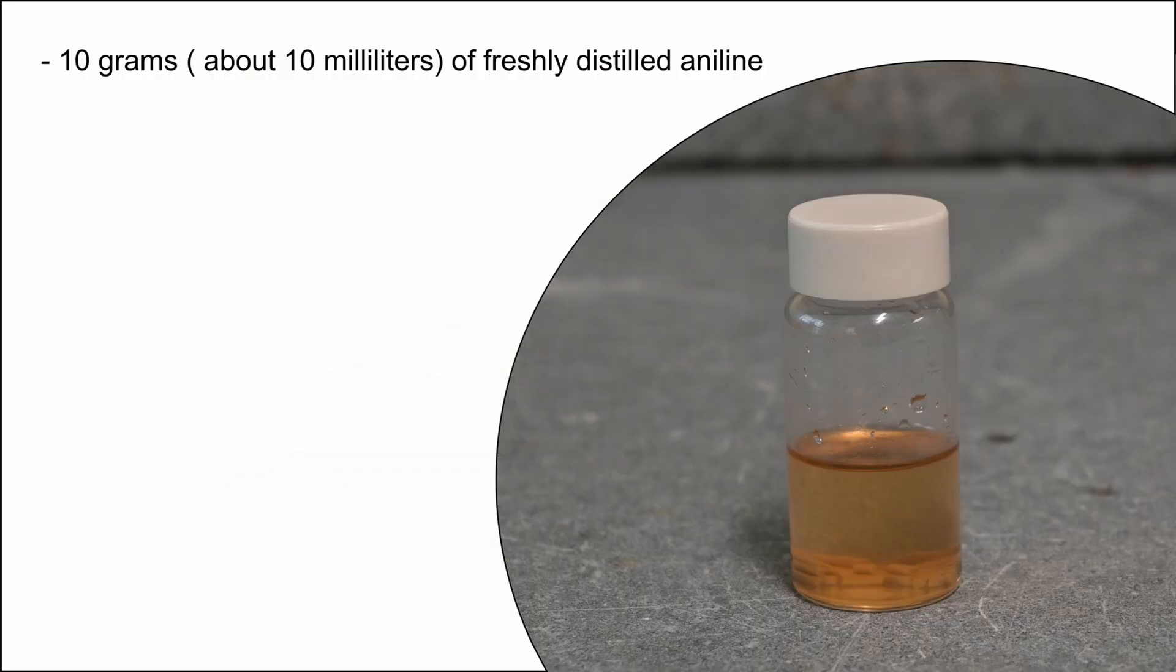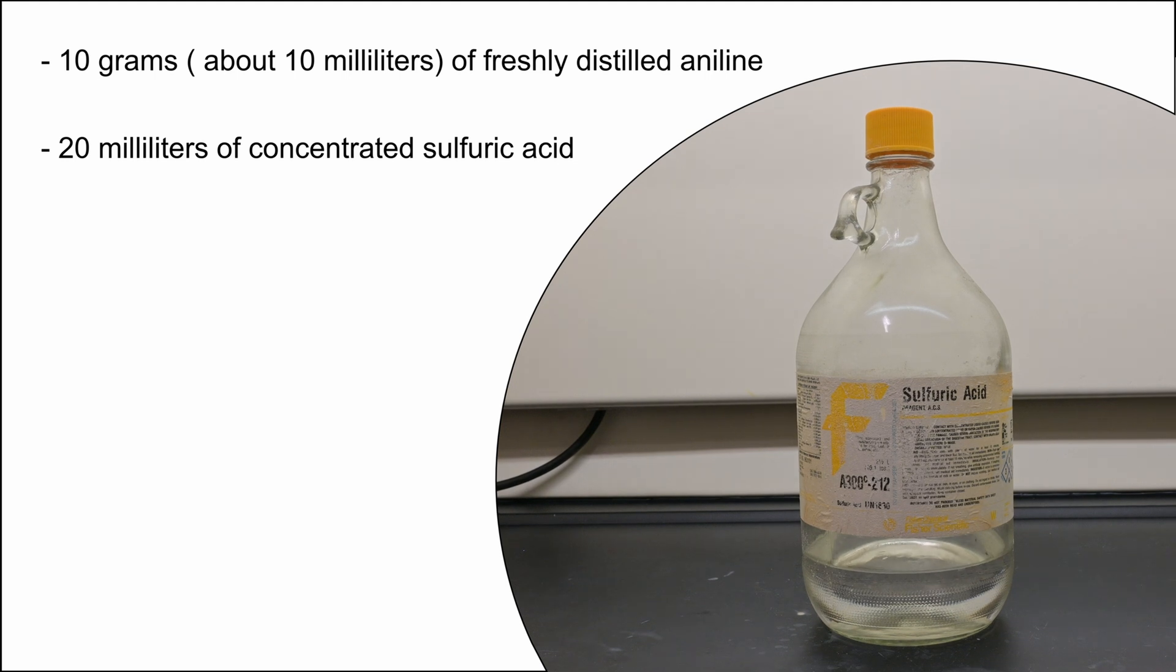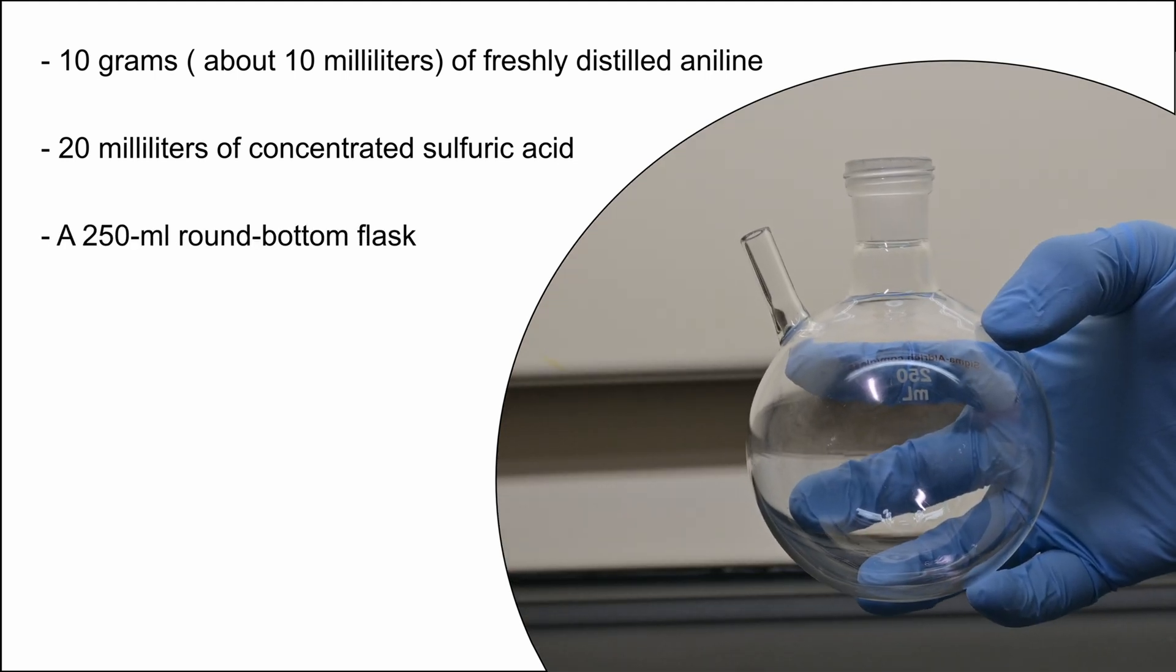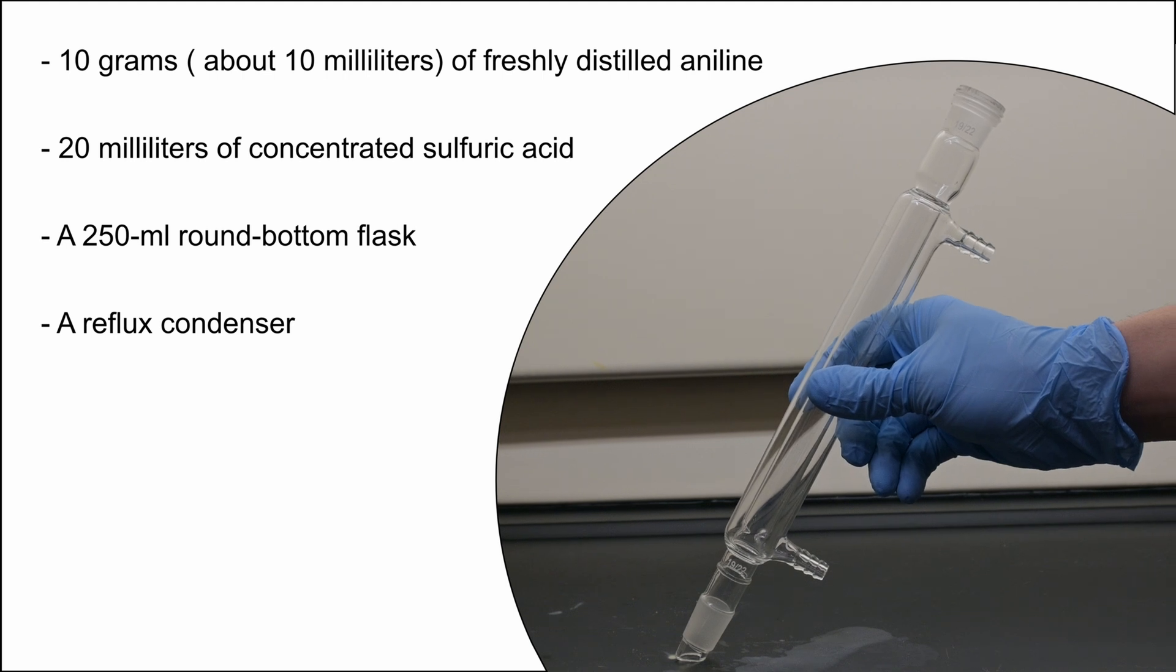Here's what you'll need: 10 grams (about 10 milliliters) of freshly distilled aniline, 20 milliliters of concentrated sulfuric acid, a 250 milliliter round bottom flask, a reflux condenser, and an oil bath.